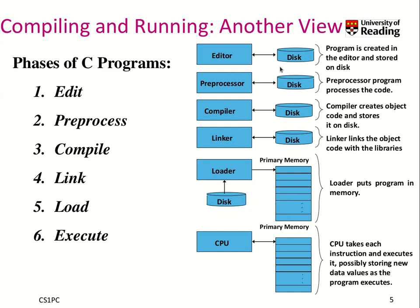All those different steps typically interact with your storage to some extent. When you save a file, it's a C file on disk. The preprocessor produces a temporary file on disk, and the compiler produces assembler code temporarily on disk as well. This can mean any type of storage — SSDs or similar.